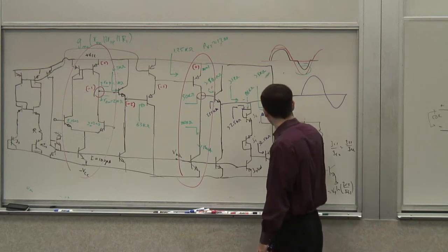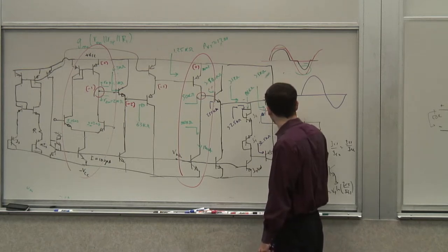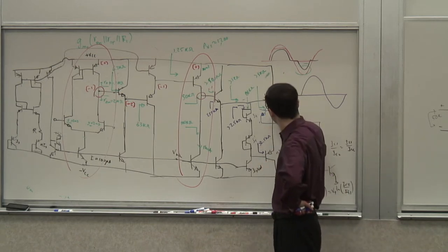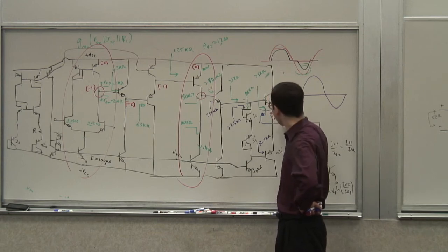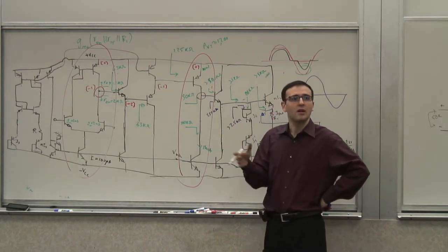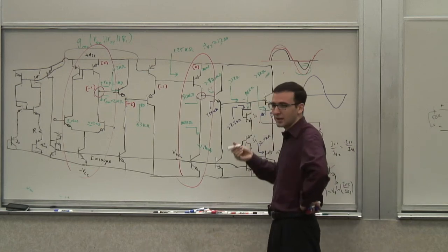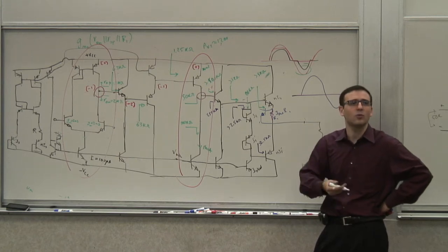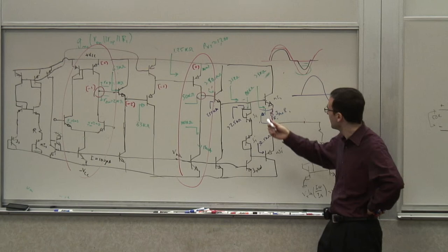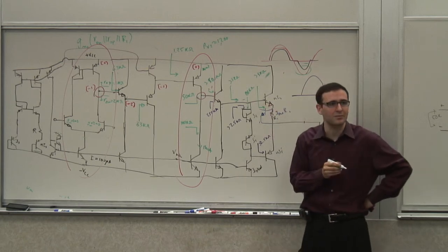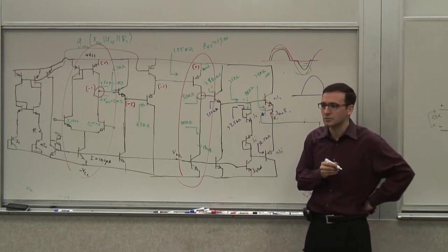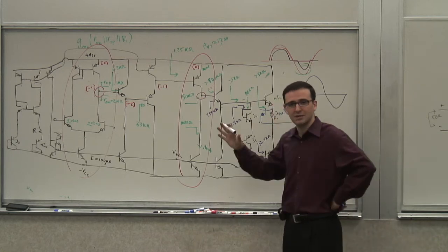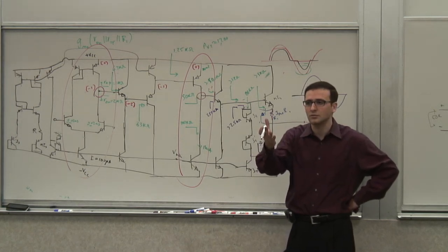The VBE of this guy is basically I_out times R1. So when this voltage becomes large, I have to pick the value of R properly. Let's say the maximum current this guy can handle is 100 milliamps. I don't want the current on this to exceed 100 milliamps. So I measure this current and I want this voltage to be approximately 0.6 volts at that point.